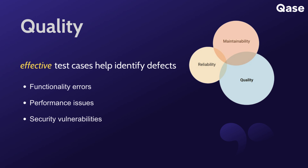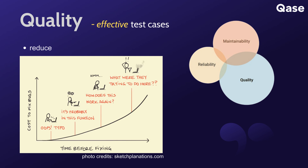The earlier issues are identified in the development process, the easier and less expensive they are to fix. Writing test cases allows for early detection of issues, reducing the likelihood of critical defects reaching production.